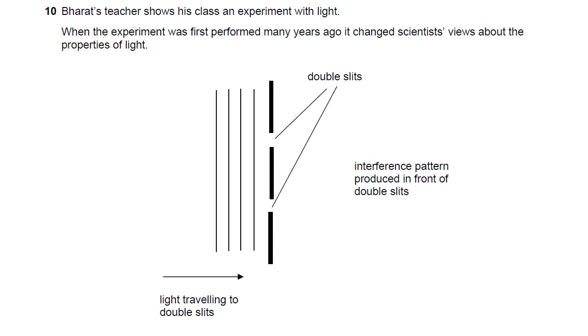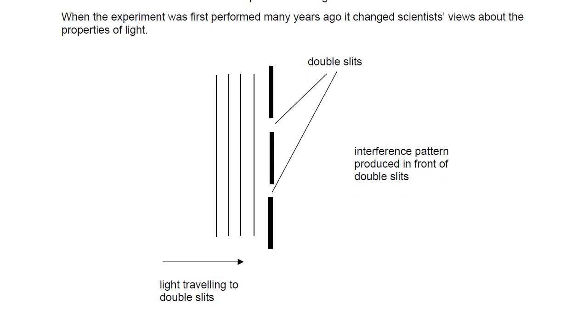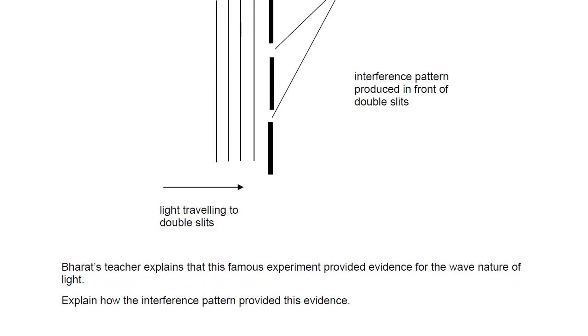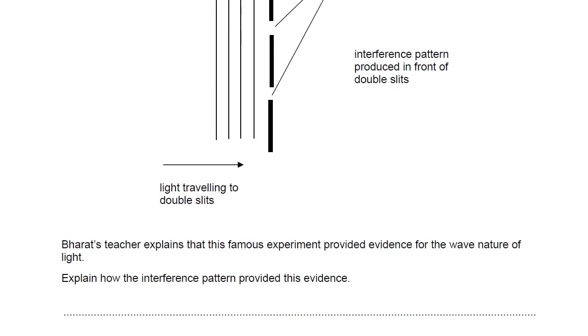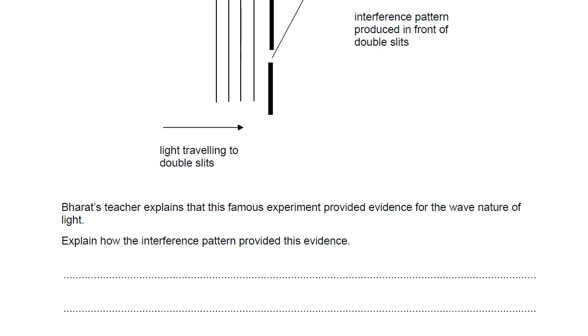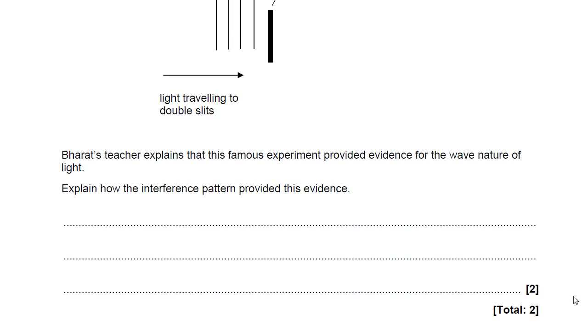So let's see what the question is going to ask us to do. Bharat's teacher explains this famous experiment provided evidence for the wave nature of light. Explain how the interference pattern provided this evidence.